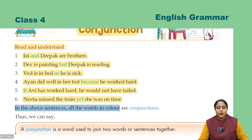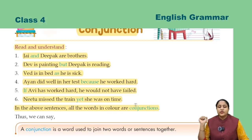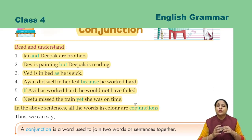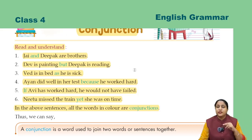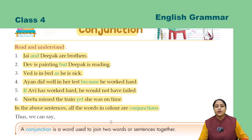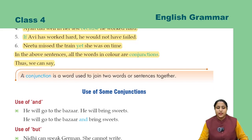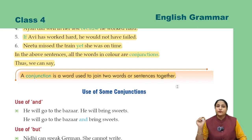In the above sentences, all the words in color are conjunctions. Oopar jitne bhi colored words hain, woh sab conjunctions hain. Conjunctions aise words hote hain jo do sentences ko ya do words ko join karate hain. Jaise first sentence mein Jay aur Deepak — do logon ko 'and' ne join kiya hai. Aur Dev is painting, Deepak is reading — yaha par do sentences hain, inko conjunction ne join kiya hai. Thus, we can say: a conjunction is a word used to join two words or sentences together.